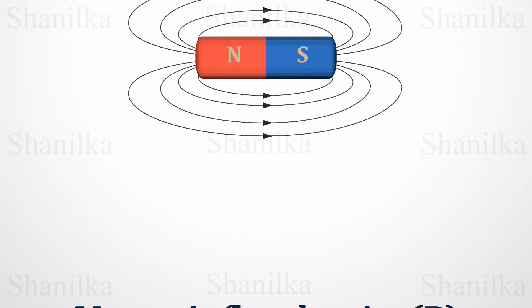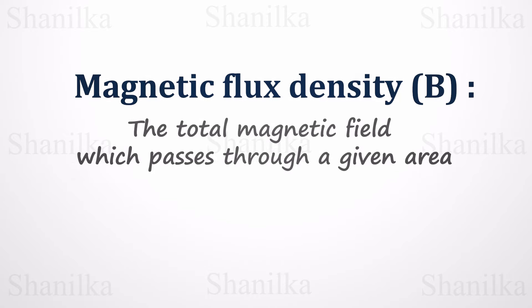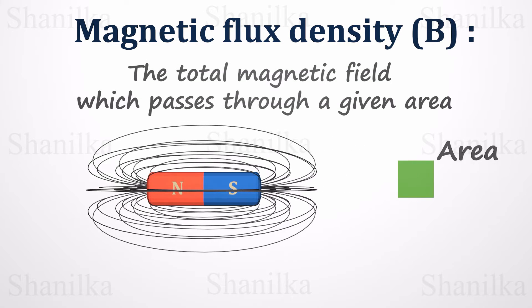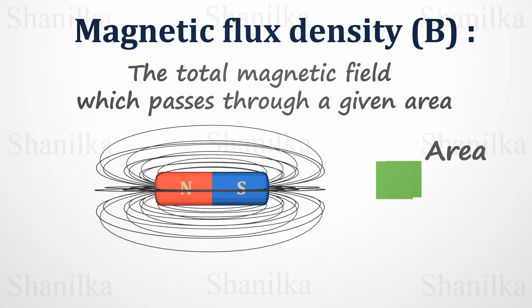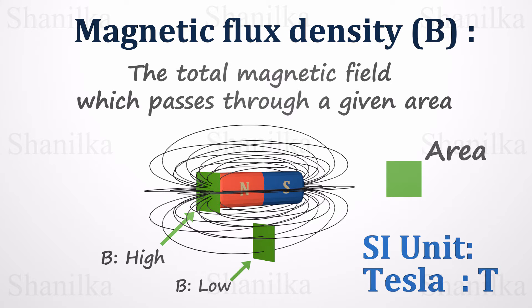The total magnetic field which passes through a given area is called the magnetic flux density. It is denoted using the letter B. If we consider a bar magnet, the magnetic field lines around it can be shown like this. Let's consider area A. If we place it near the pole end of the magnet, the number of magnetic fields passing through the area is high. If we set it somewhere else like this, the number of magnetic field lines passing through the area is low. The SI unit of the magnetic flux density is Tesla. It is a measurement of the magnetic field's strength.